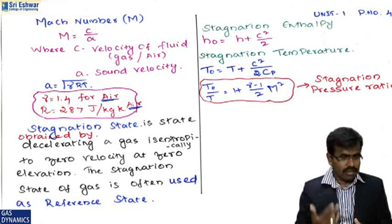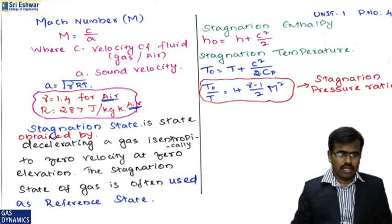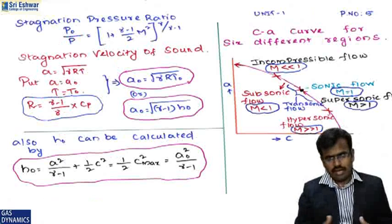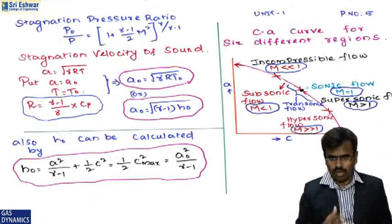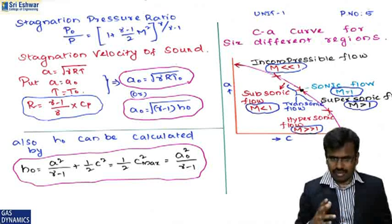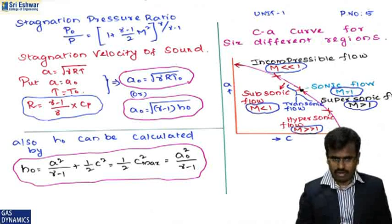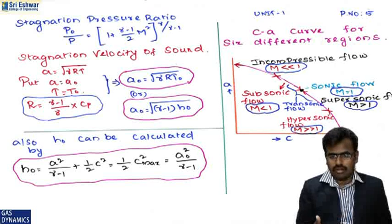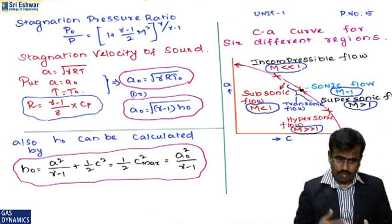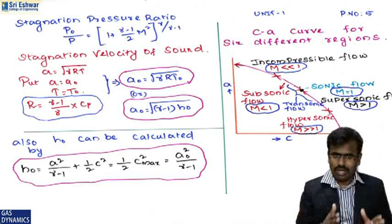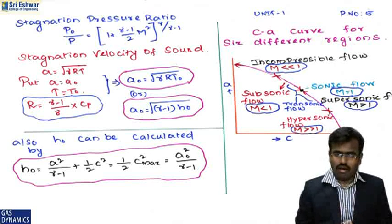T₀/T = 1 + (γ−1)/2 · M² is the basic equation to solve problems. The stagnation pressure ratio is p₀/p = [1 + (γ−1)/2 · M²]^(γ/(γ−1)). The stagnation velocity of sound is a₀ = √(γRT₀). If a = a₀, then T = T₀. If R is not given, it can be found from R = [(γ−1)/γ] · cₚ.